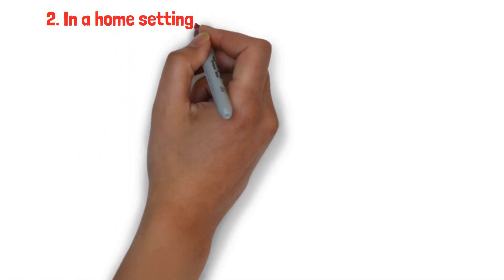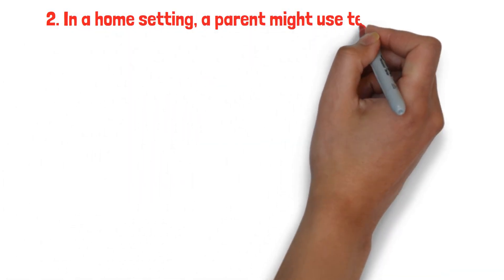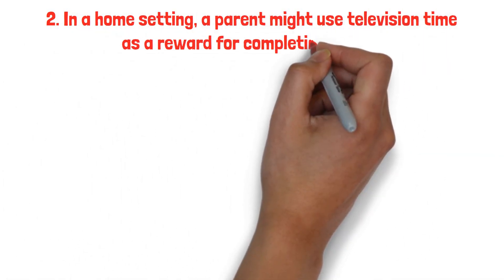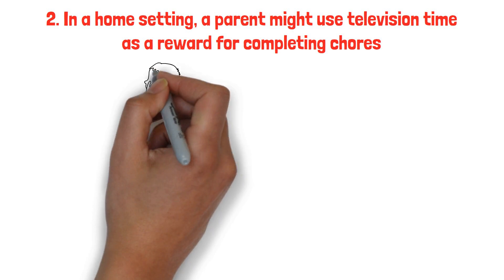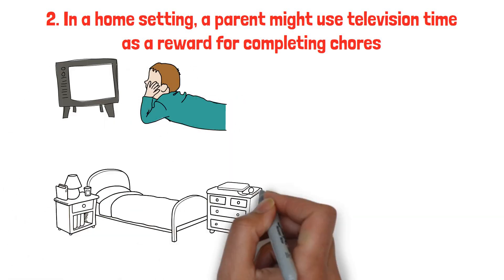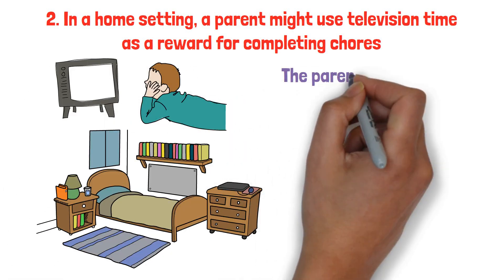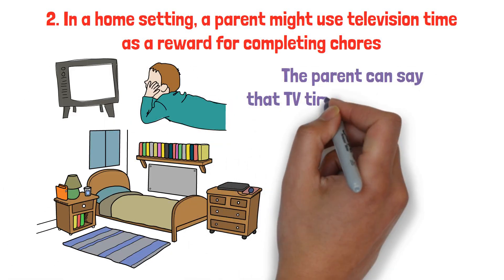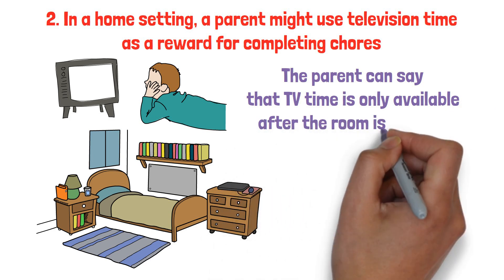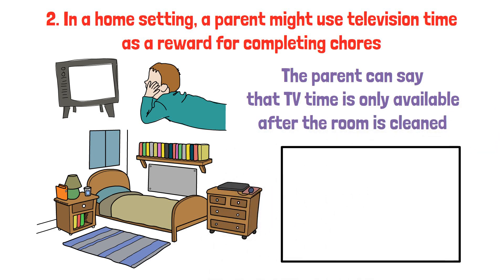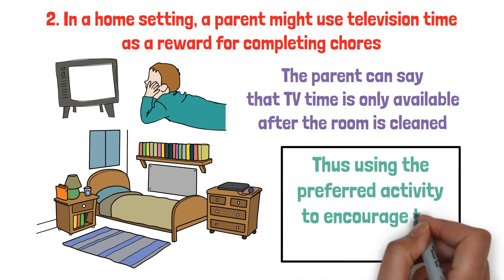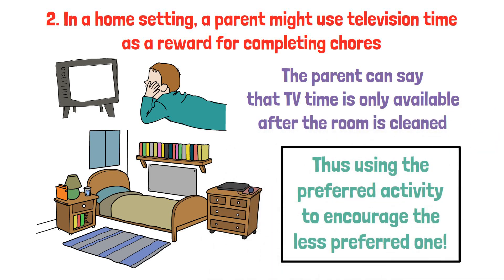Second, in a home setting, a parent might use television time as a reward for completing chores. If a child loves watching TV but dislikes cleaning their room, the parent can say that TV time is only available after the room is cleaned, thus using the preferred activity to encourage the less preferred one.